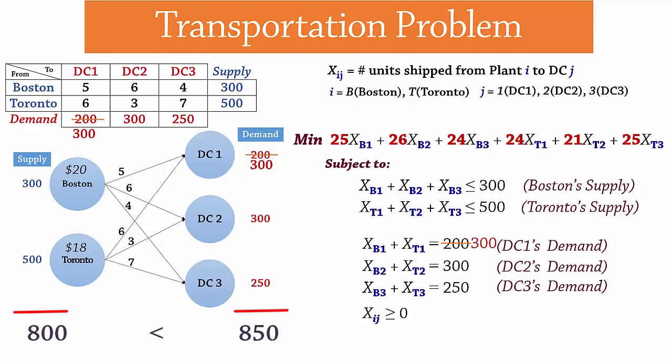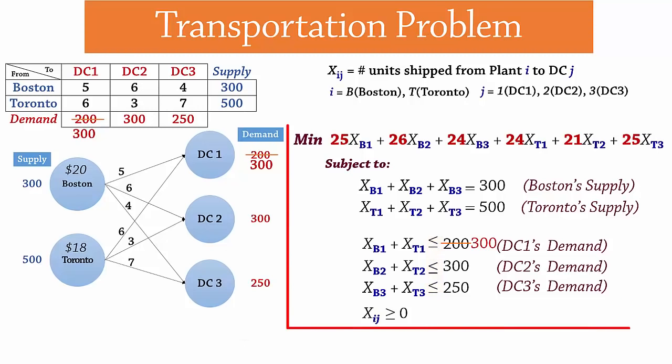Since demand exceeds supply, all available supply will be used up. So we simply change the less than or equal signs here to equal signs. And since demand is not going to be fully met at some of the distribution centers, we change the demand equality signs to less than or equal signs. And the model is again complete.